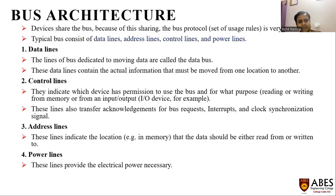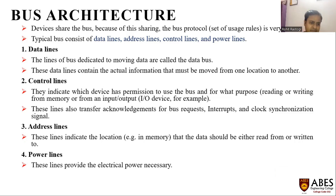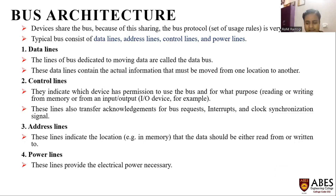Data is mainly of three types: data, address, and control signals. Whenever data bits are transferred through the bus, it is called the data line. Whenever control signals such as read or write operations are transferred, this is called the control line. Whenever address signals are transferred through the address bus, this is called the address line.